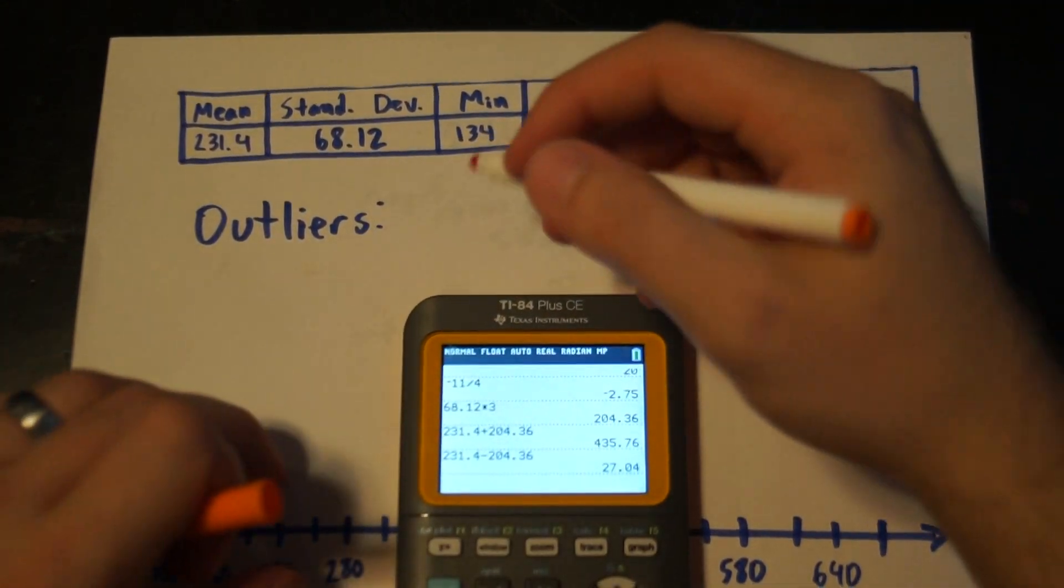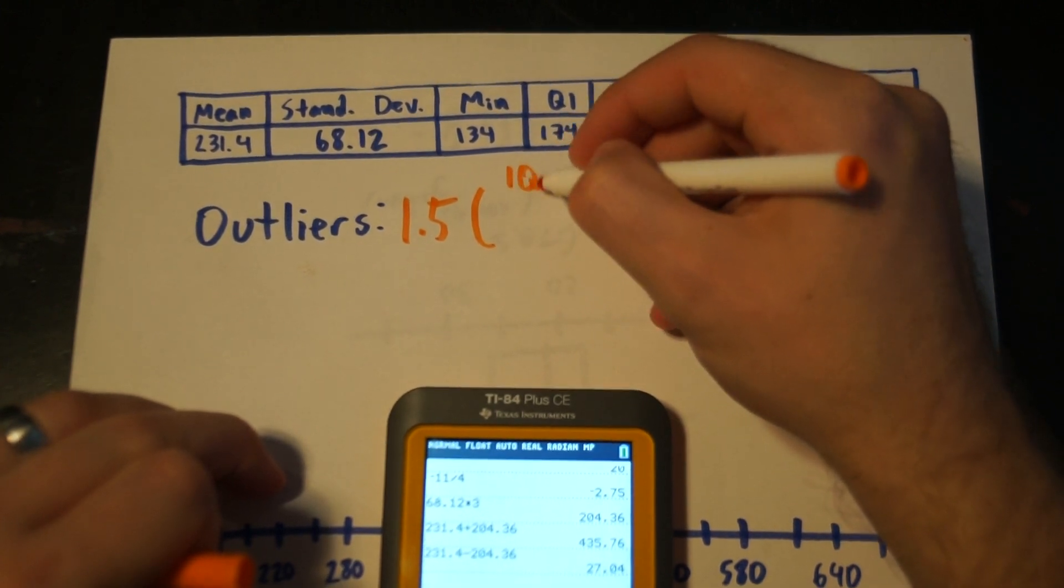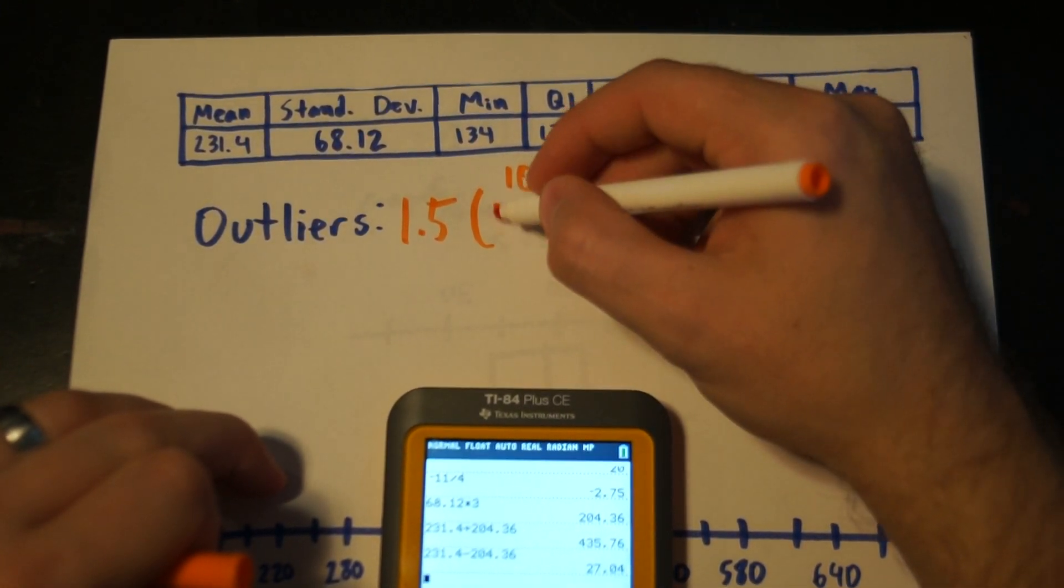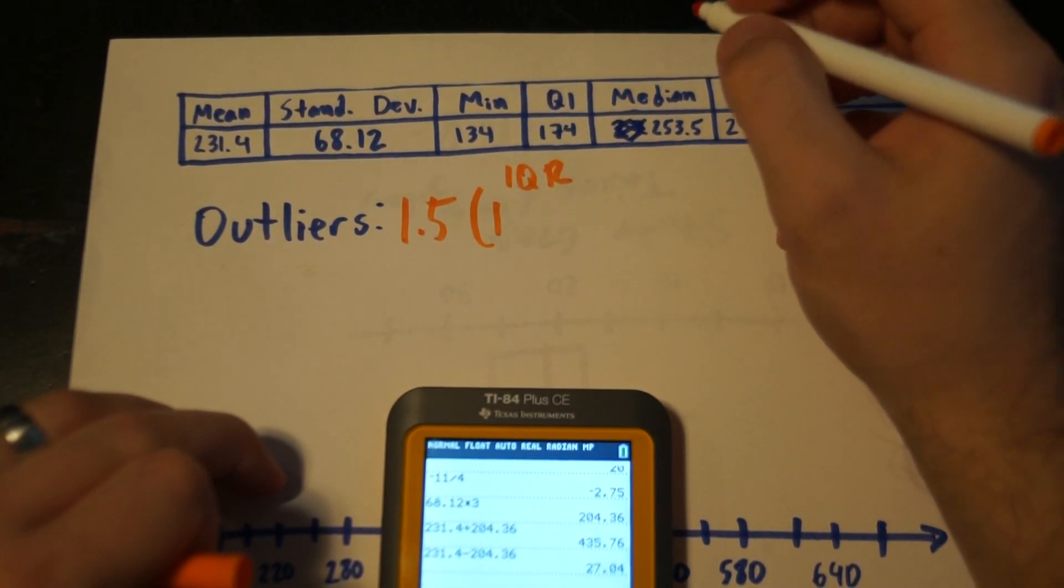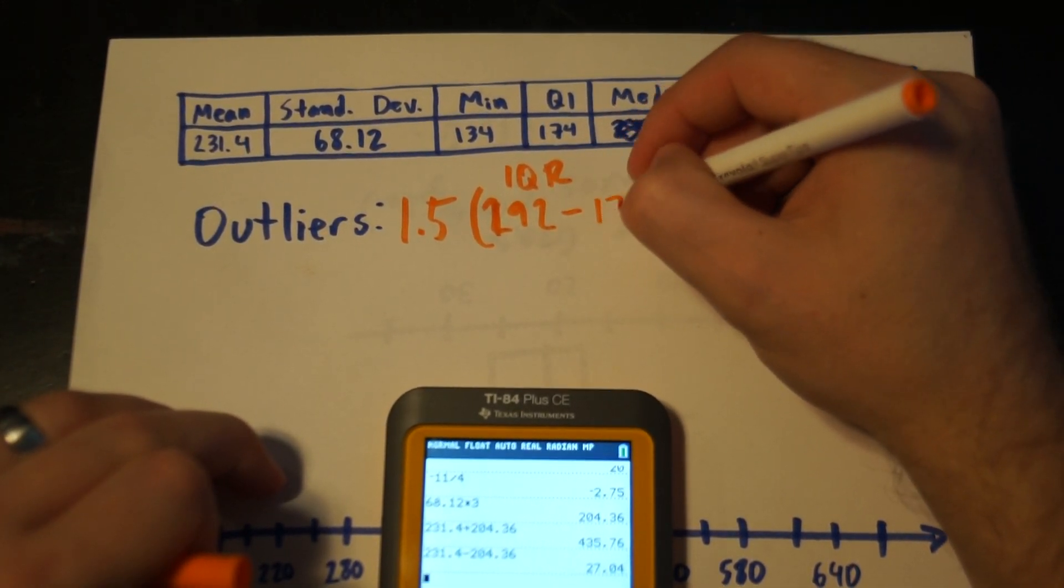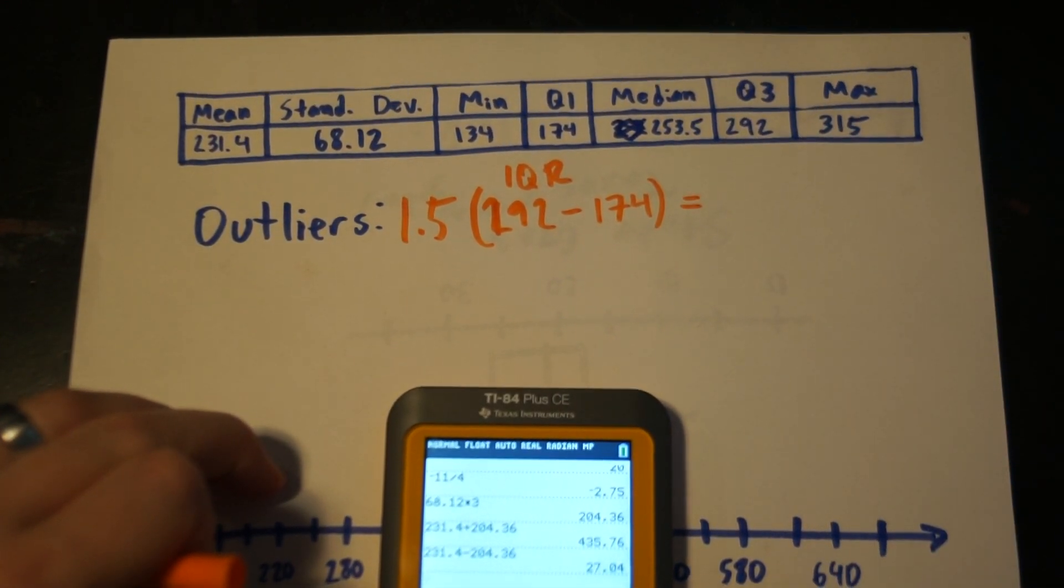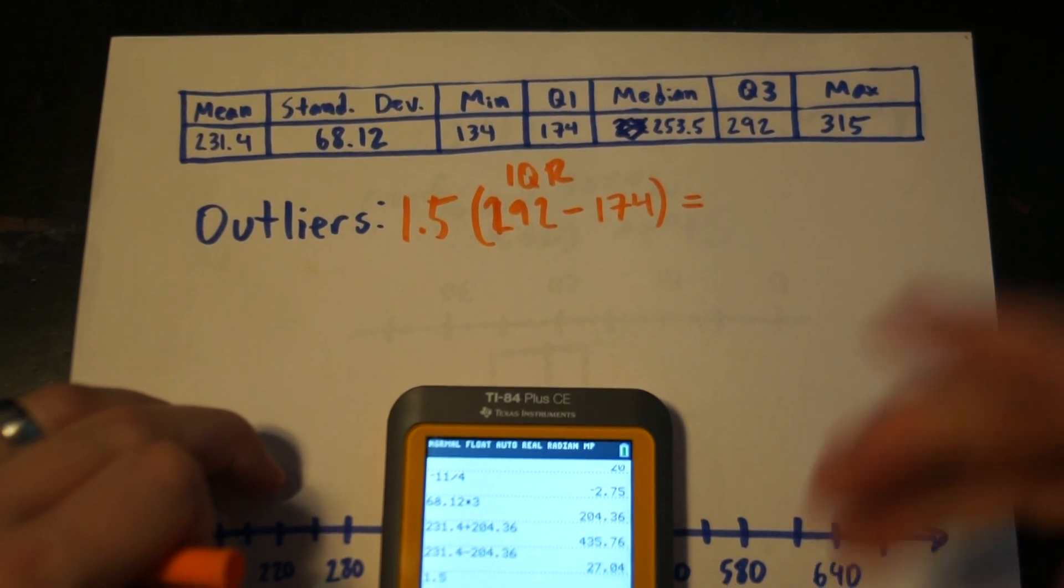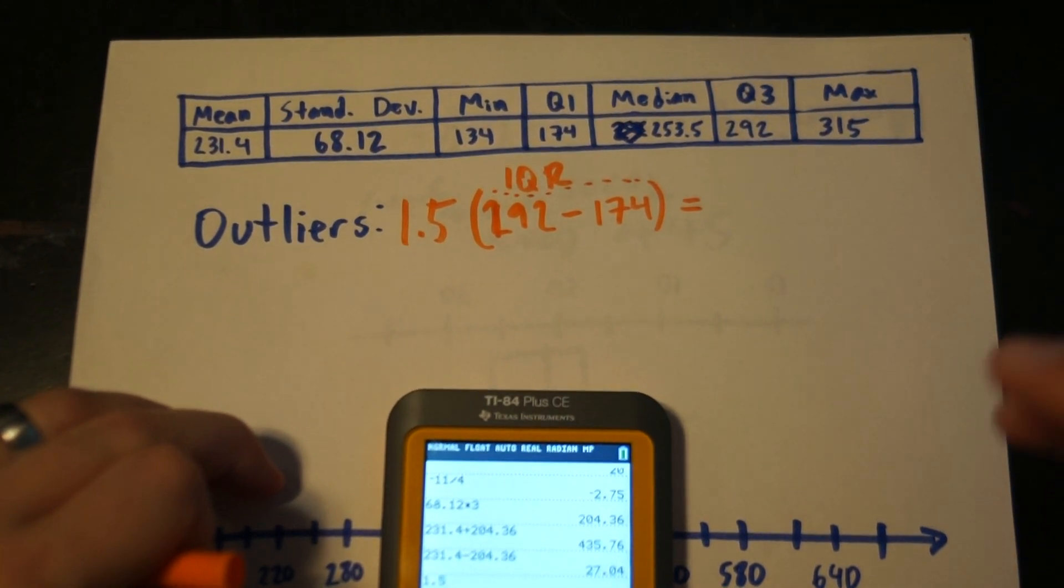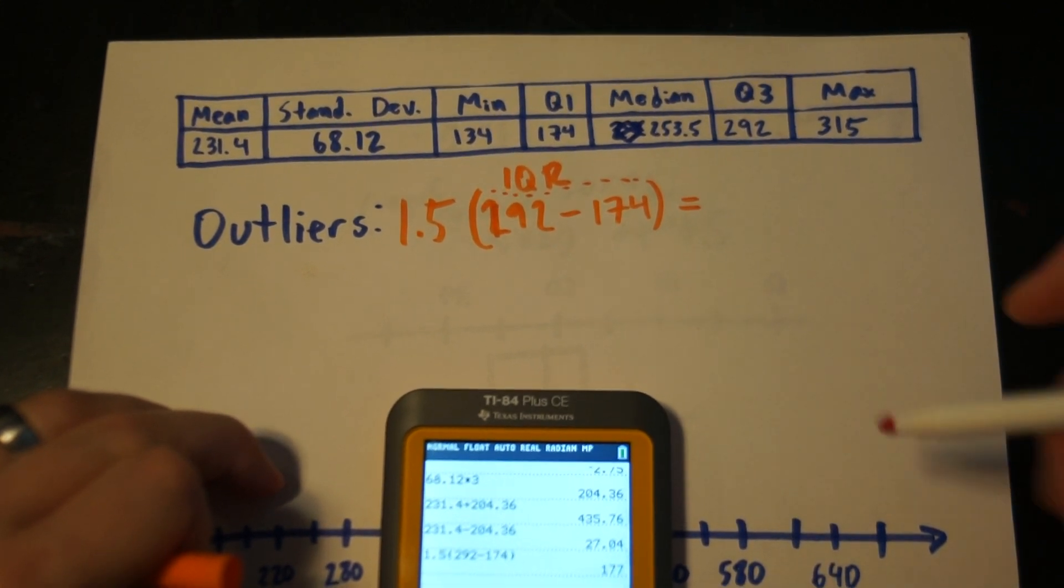If we wanted to use interquartile range instead, then we would do 1.5 times our interquartile range, which in this case is 292 minus 174. And let's see, 1.5. Remember, just what's in here is your interquartile range. Your interquartile range is just your distance from quartile one to quartile three. So 1.5 times 292 minus 174. We get 177.